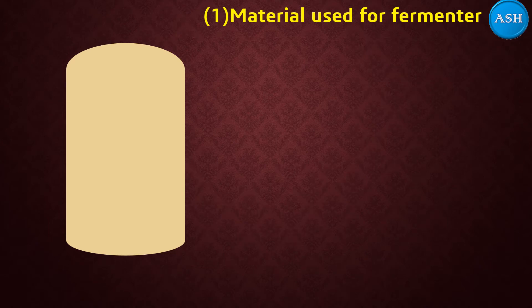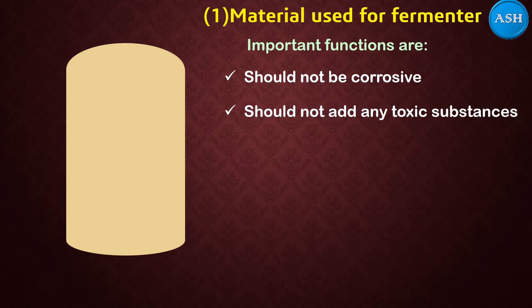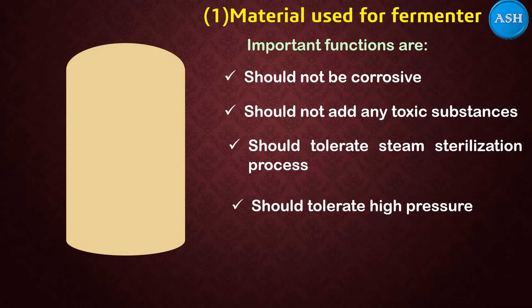The first part of the fermenter is the material used. As you can see in the diagram, the fermenter is cylindrical in shape. The main important requirements are: the material should not be corrosive, it should not add any toxic substances, it should tolerate steam sterilization, and it should tolerate high pressure.